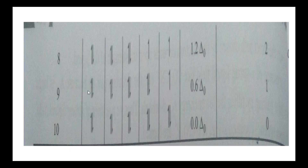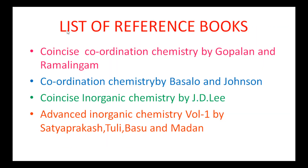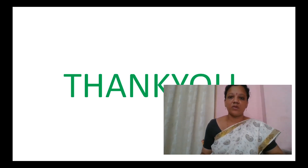For d⁹ (weak ligand): ninth electron goes to eg. CFSE = (6 × 0.4) + (3 × −0.6) = 2.4 − 1.8 = −0.6 delta, unpaired = 1. For d¹⁰ (weak ligand): tenth electron pairs up in eg. CFSE = (6 × 0.4) + (4 × −0.6) = 2.4 − 2.4 = 0, unpaired = 0. These are the list of reference books for this unit, that is coordination chemistry. Thank you.